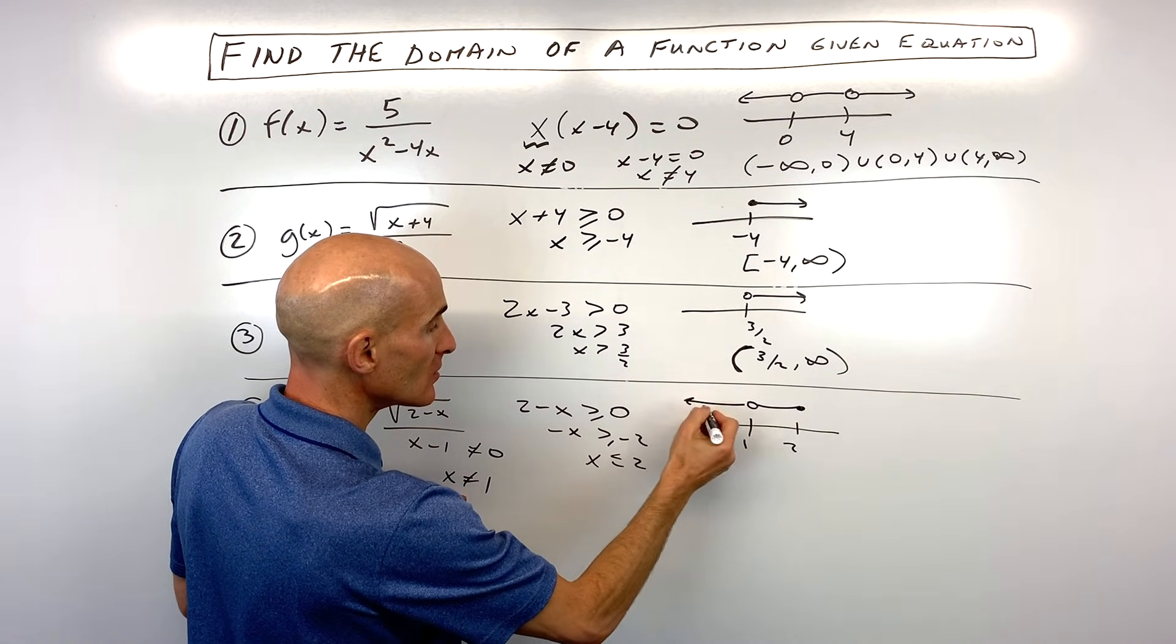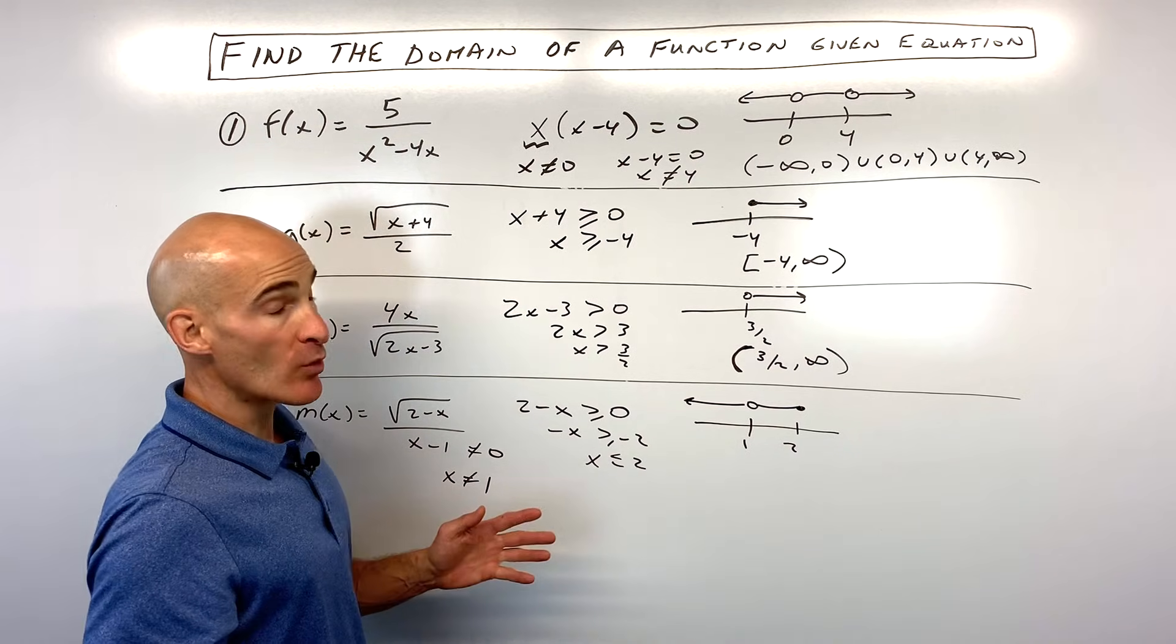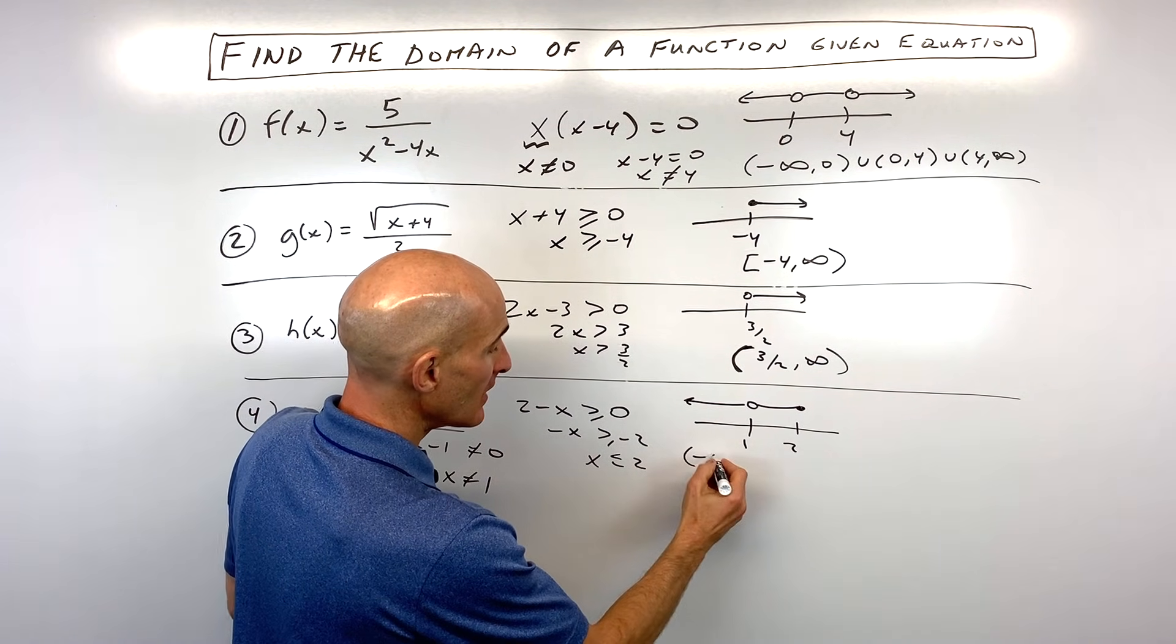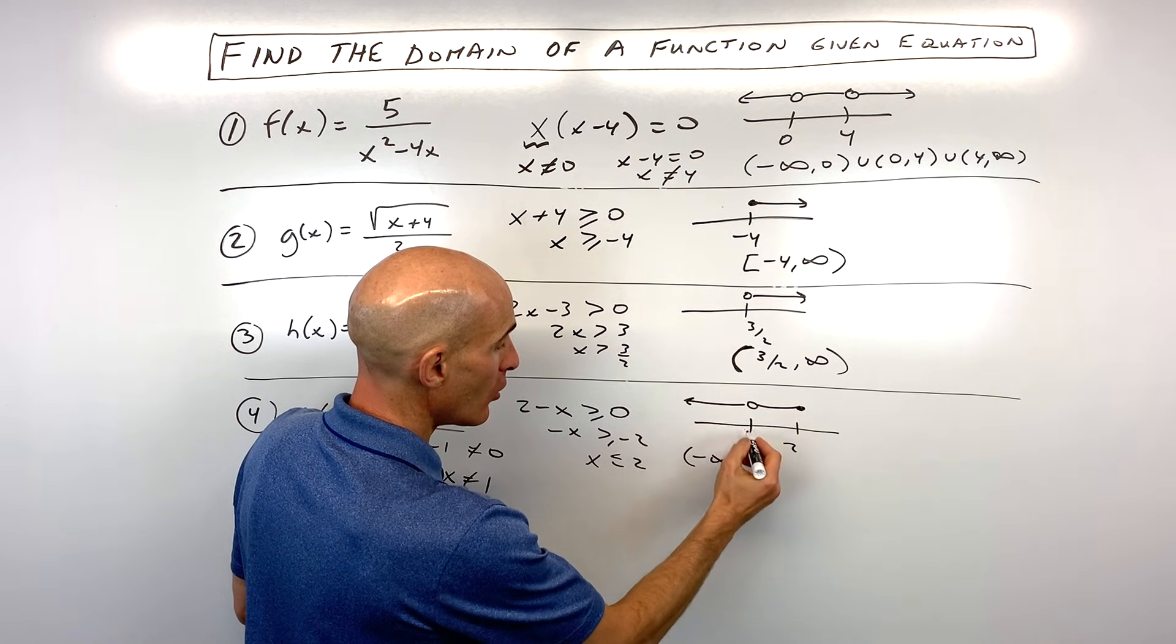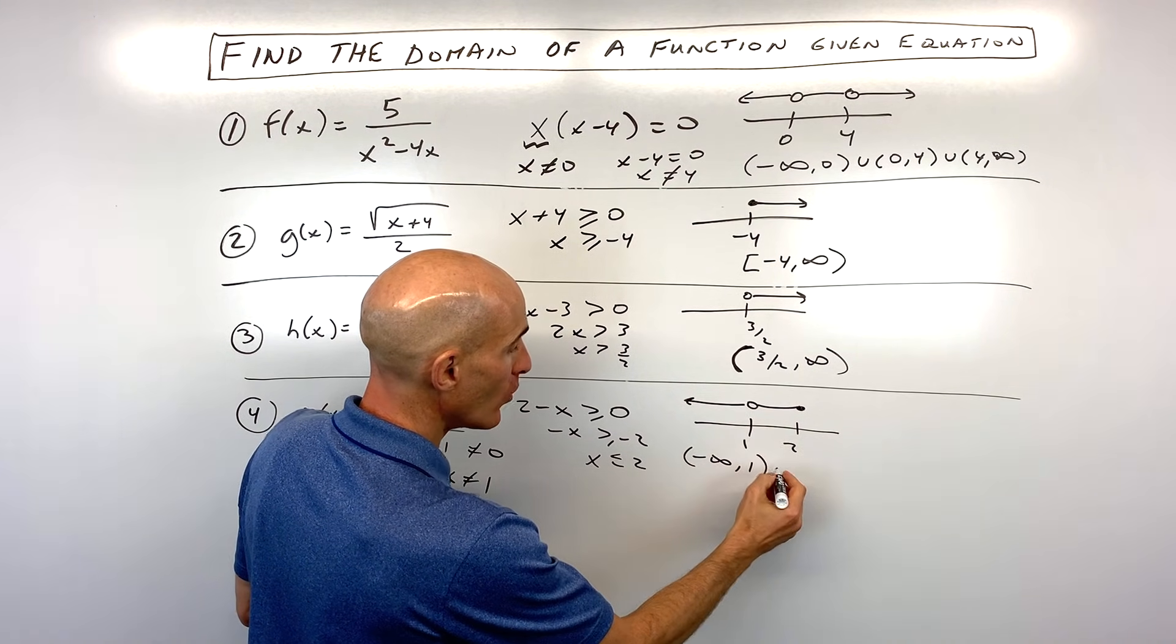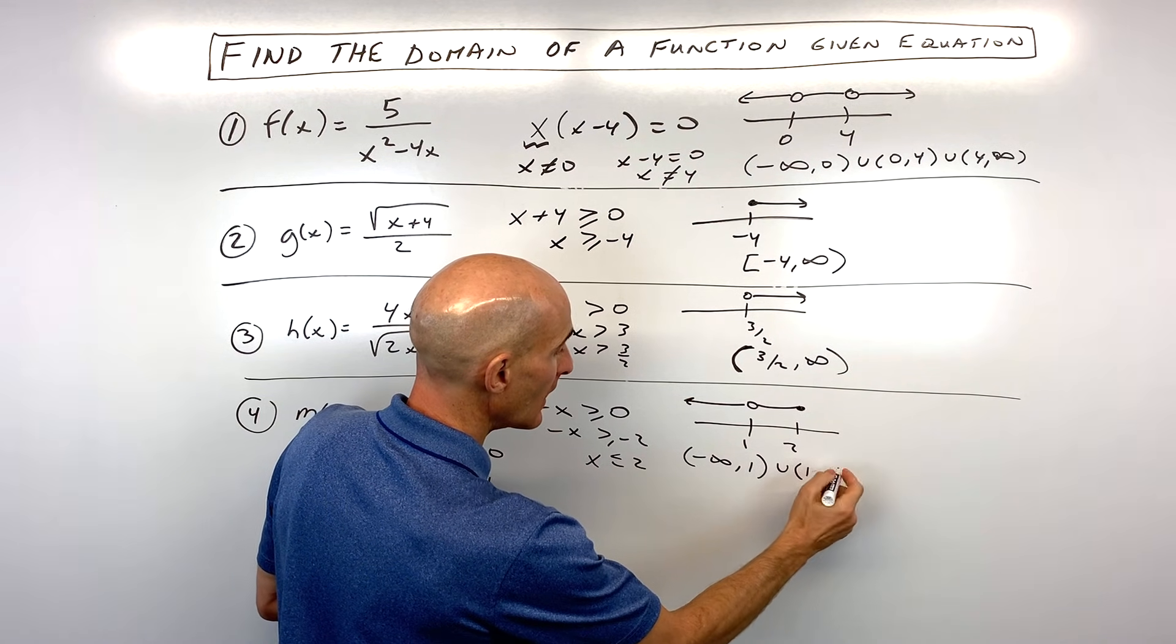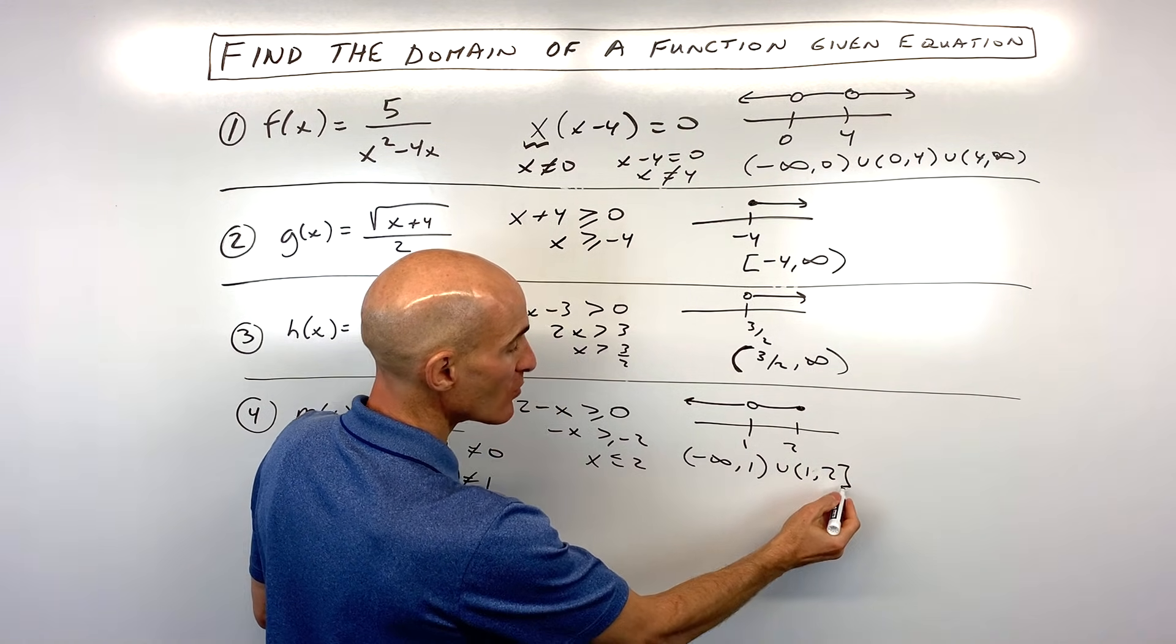So it's less than or equal to two, but it can't equal one. So when we write our intervals now, we want to work from left to right or low to high. And you can see this is from negative infinity all the way up to one, not including one, union one to two. And it includes two, so we're going to use the bracket. So that's our domain for the last one, and you got it.